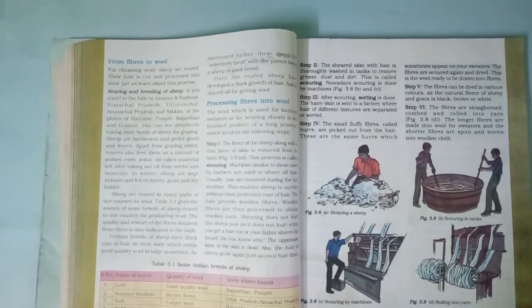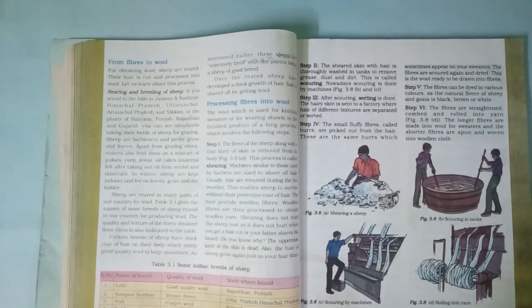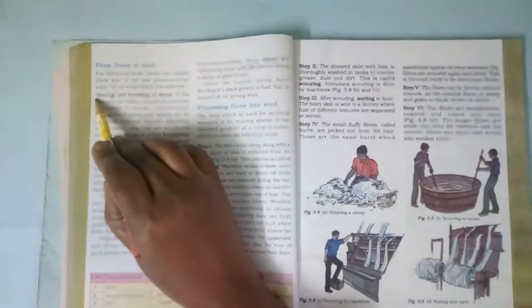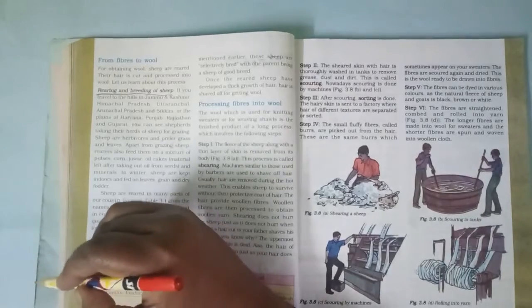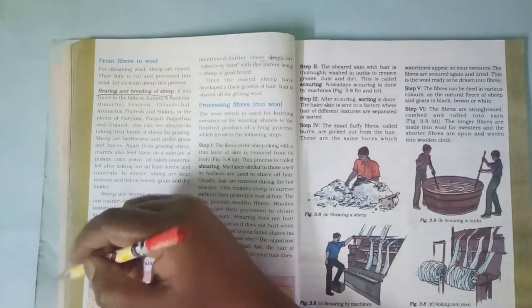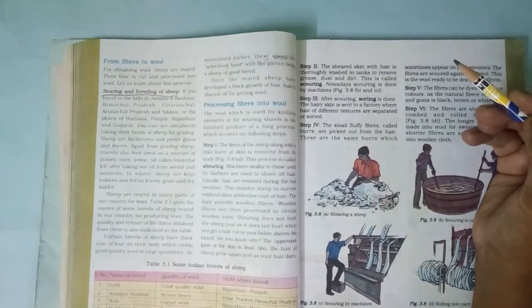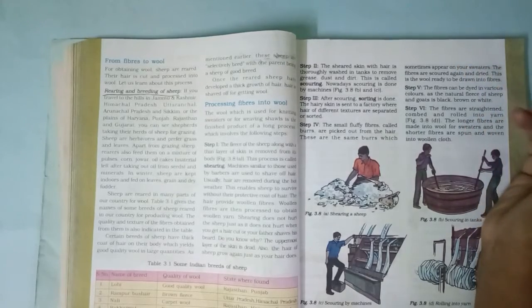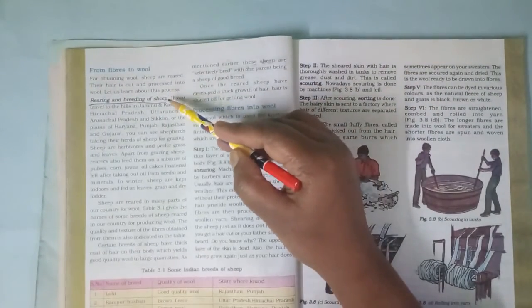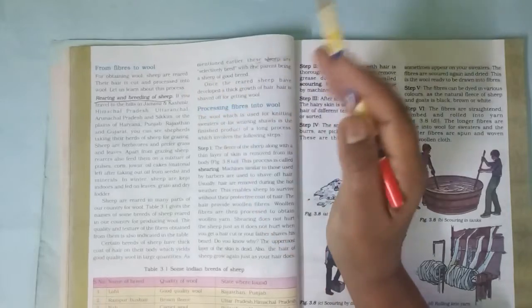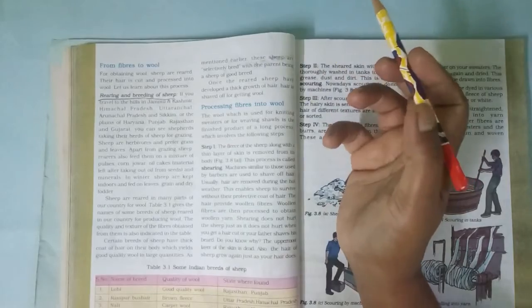Children, in this session let us learn how wool-giving animals like sheep, goat, or any animal which gives wool can be taken care of - that means rearing and breeding of sheep. Since sheep is the major animal which gives us the quantity of wool that is used by people, it becomes very important to know how to take care of sheep to increase wool production. If we travel towards the hilly regions of Jammu and Kashmir...